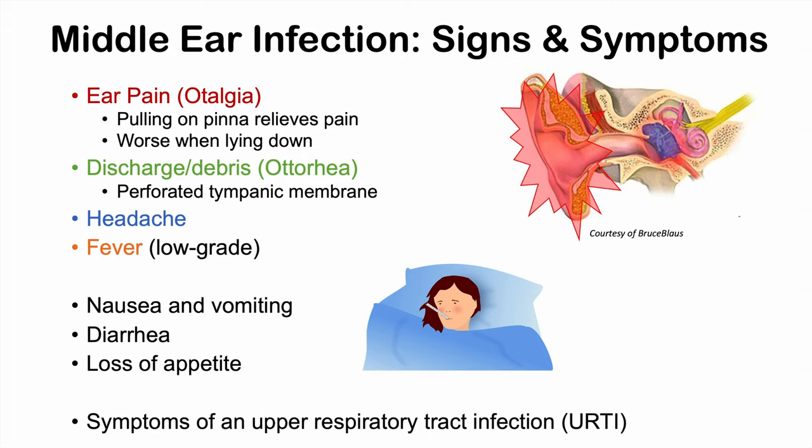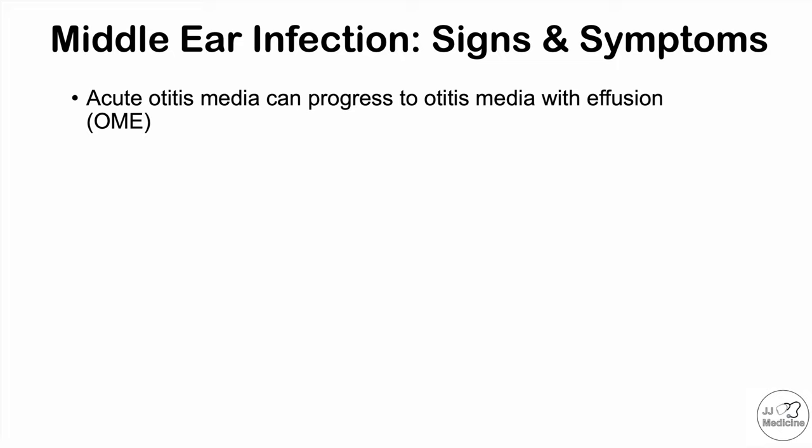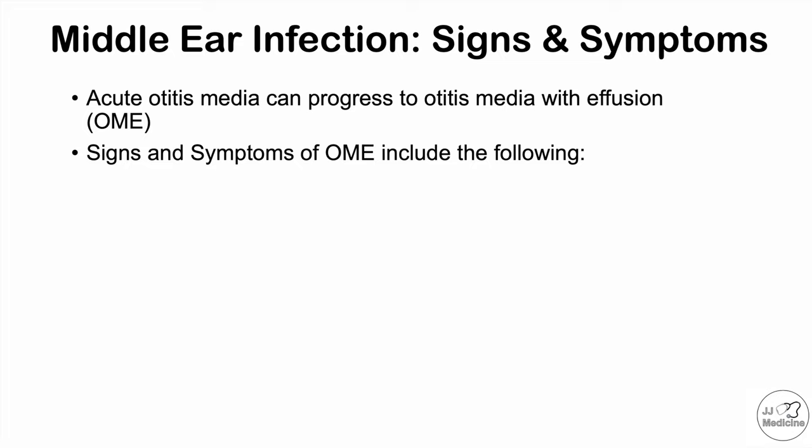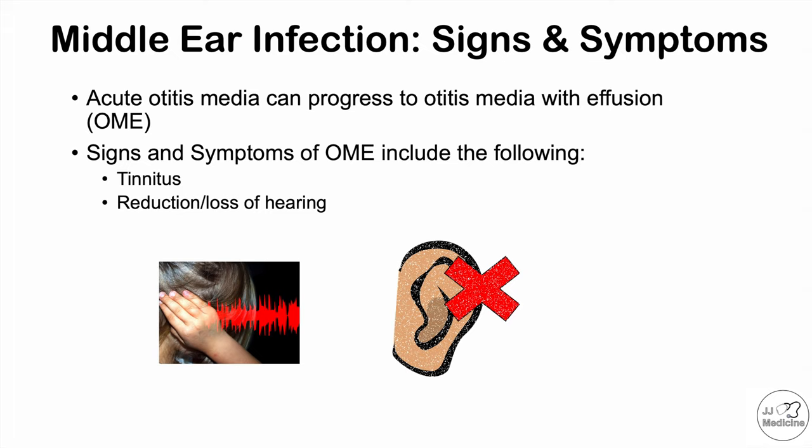Acute otitis media can progress into another condition called otitis media with effusion (OME). Otitis media with effusion can have extra symptoms in addition to those already mentioned — including tinnitus, which is a ringing of the ears, a reduction or loss of hearing, and vertigo, which is the sensation of the room spinning.